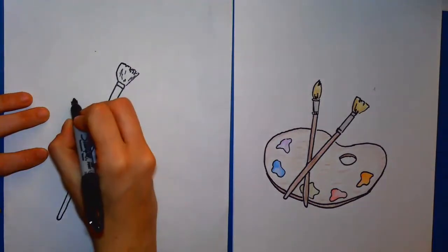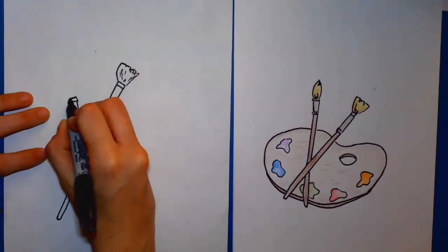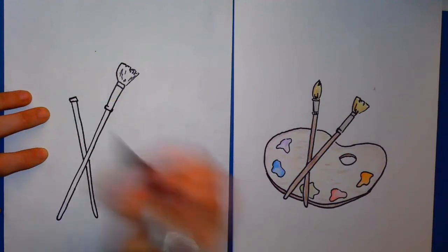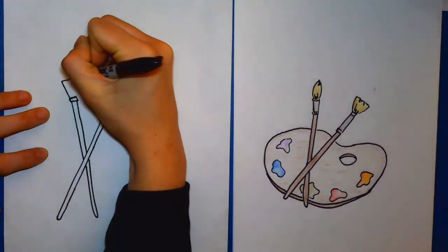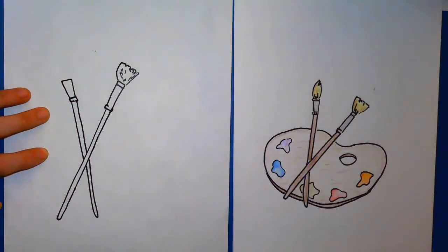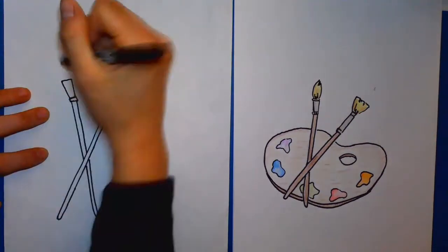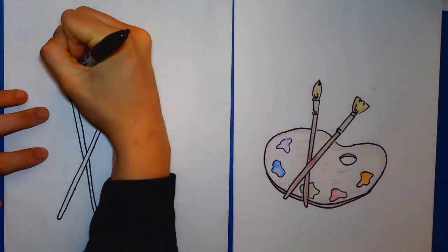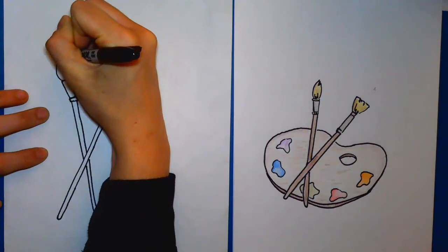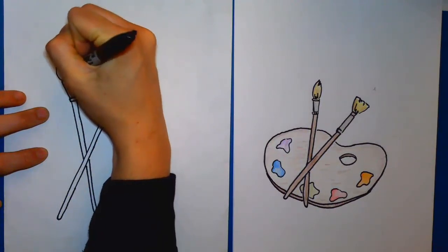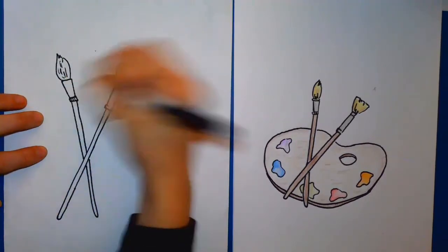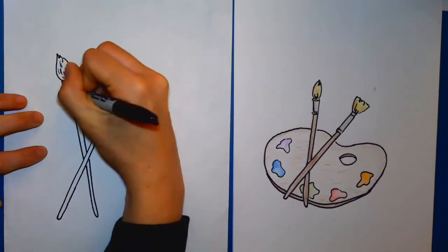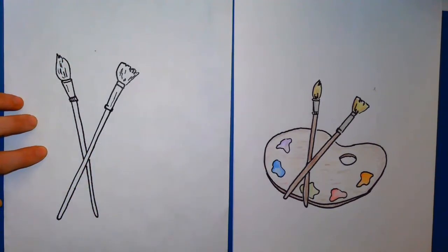And then we'll start with a little ferrule in here this time. Add the bristles down. And again, just add those lighter lines to the other paintbrush, and add some deeper lines to add that bristle texture.